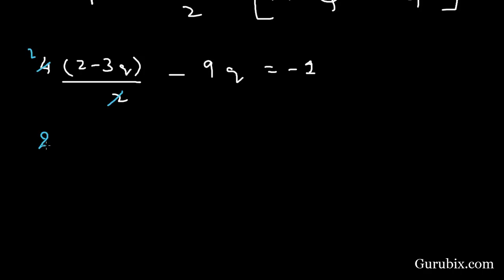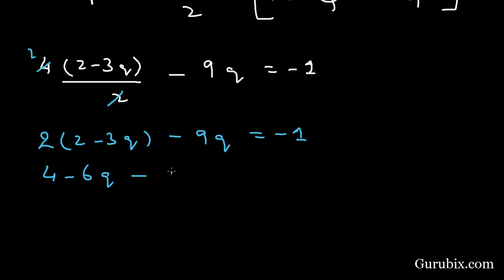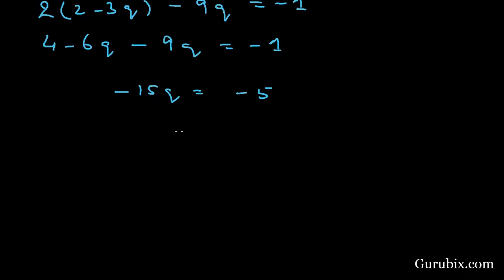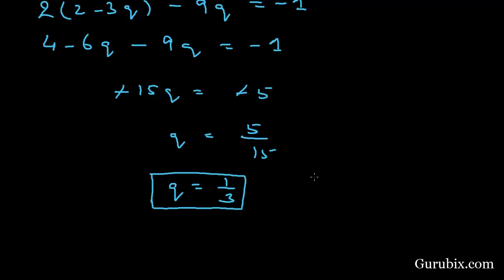Then we have 2(2 - 3Q) - 9Q = -1. Multiplying out gives 4 - 6Q - 9Q = -1, so -15Q = -5, which means Q = 1/3.